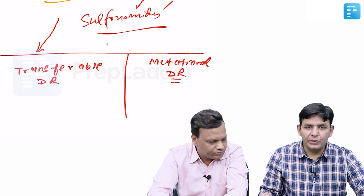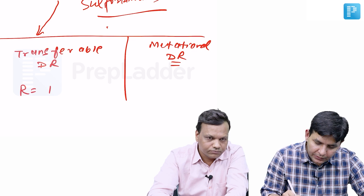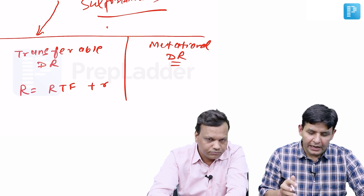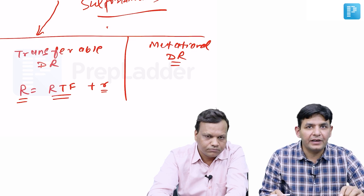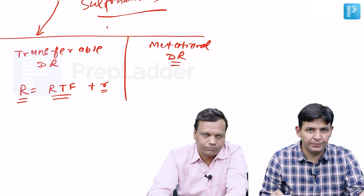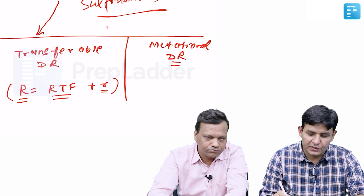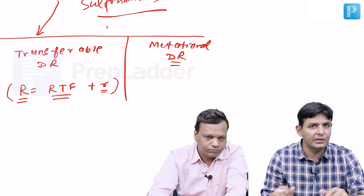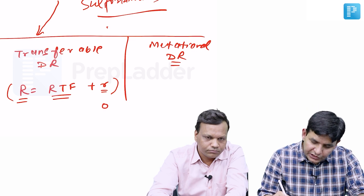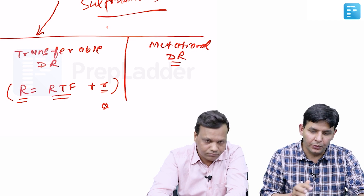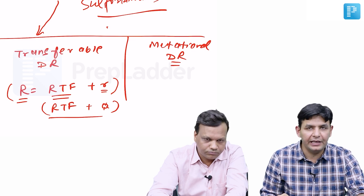In transferable drug resistance, you have to remember an equation: R = RTF + r. Capital R is resistance, RTF is the resistance transfer factor, and small r is the determinant factor which determines to how many drugs the resistance will happen. Small r is like a circle to which drugs attach — however many drugs attach, that resistance transfers at one go. Both RTF and small r are needed to transfer resistance.